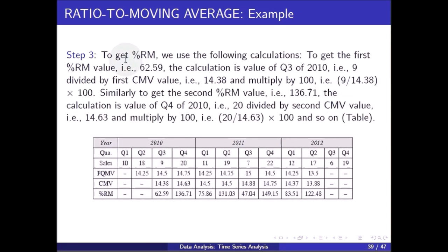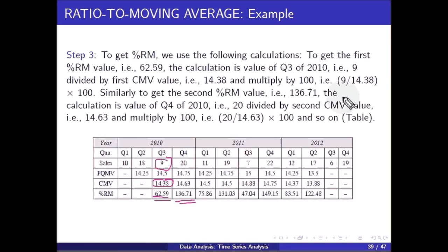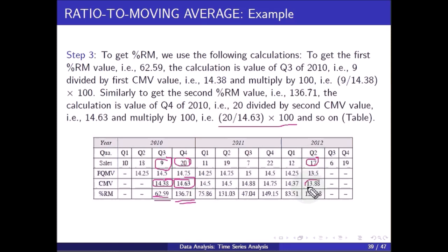Step 3: to get the percentage RM values. The first percentage RM value of 62.59 is calculated as: value of Q3 of 2010 (which is 9) divided by the first CMV value (14.38) multiplied by 100. The second percentage RM value of 136.71 is: Q4 of 2010 (which is 20) divided by the second CMV value (14.63) multiplied by 100. Similarly, 17 divided by 13.88 into 100 gives 122.48.